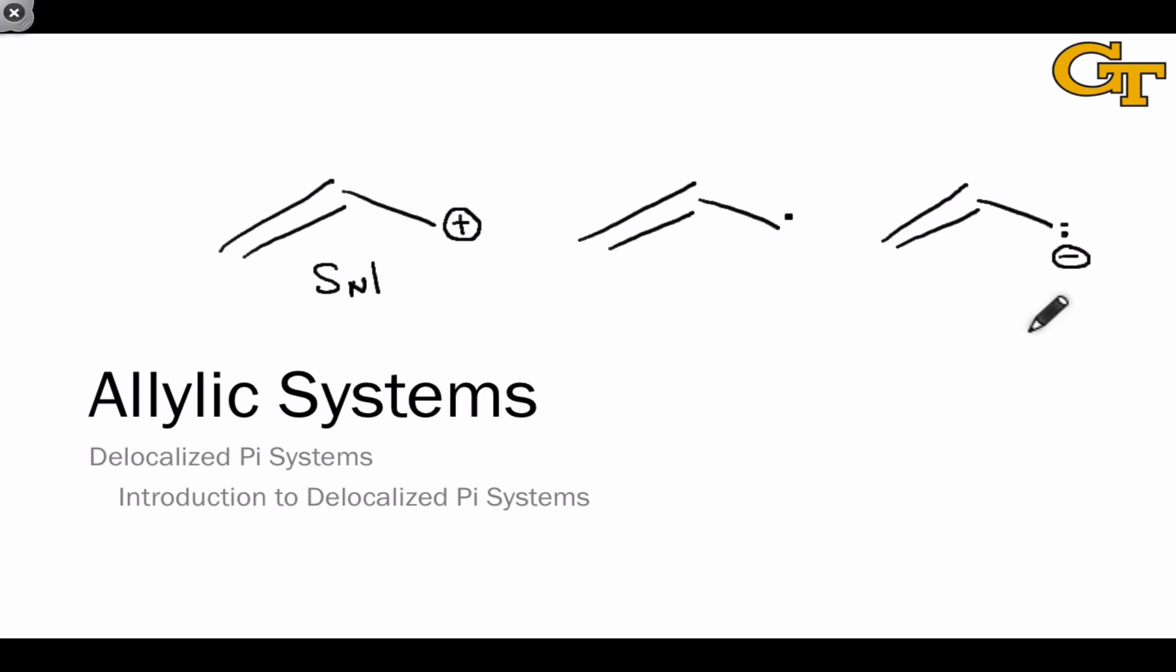In this video, we're going to examine resonance forms of allylic systems, relate these to a molecular orbital picture for the allylic pi system, and connect the greater stability of allylic cations, anions, and radicals to observations in chemical reactions.